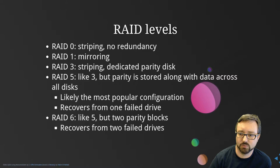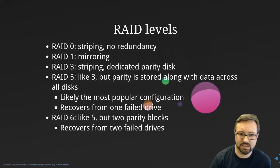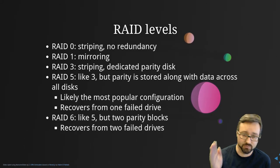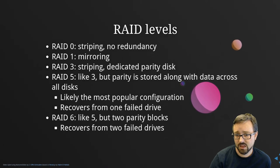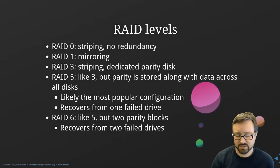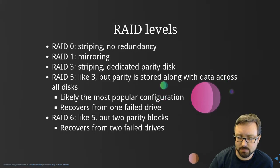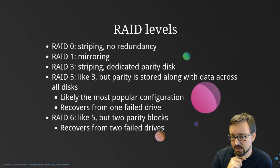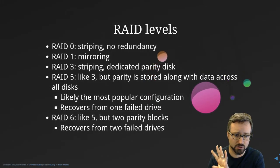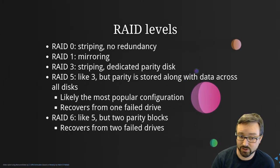RAID 3 uses striping with a dedicated parity disk — one disk is entirely devoted to parity information, so if any other disk fails you can rebuild from the parity, or rebuild the parity from the data. RAID 5 is like RAID 3, but parity is stored distributed across all the disks along with the data, so the parity block is on a different disk depending on the stripe. RAID 5 is the most popular RAID configuration and can recover from one failed disk. If you lose two disks you lose everything, so when a disk fails you want to replace and rebuild it straight away.